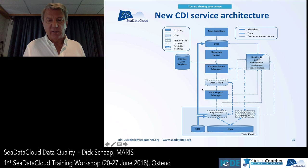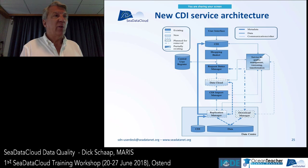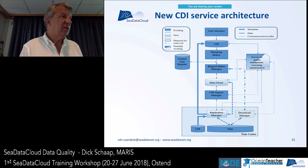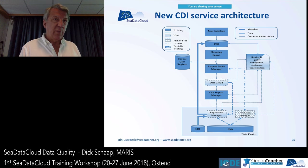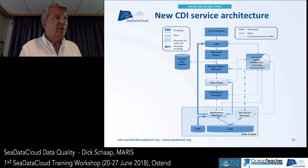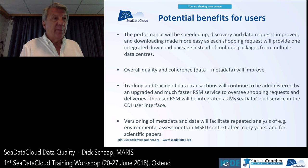There's not so much difference from the previous architecture, only some details. In the middle you see a data cloud acting as a data cache to replicate the unrestricted data. On the right there is additional quality control and transformation working together with the cloud, working on the data in the cloud in combination with the metadata in the catalog. On the bottom half you see that the Download Manager will be replaced by a Replication Manager — a more modern component that should be easier to install and configure, with different functionality.